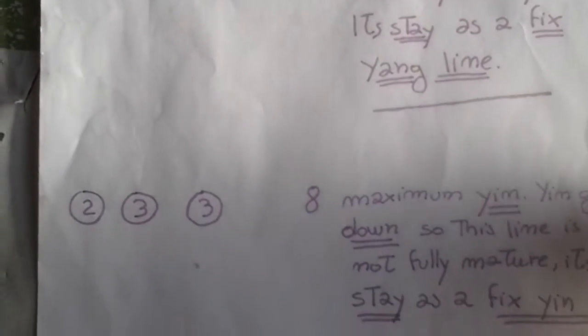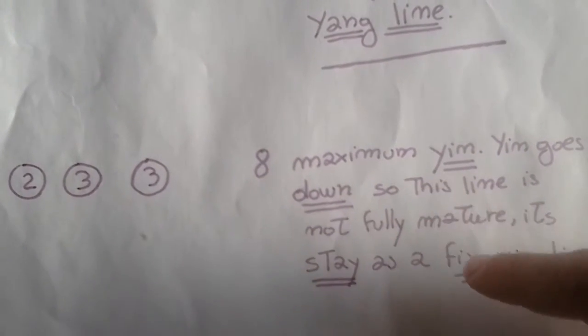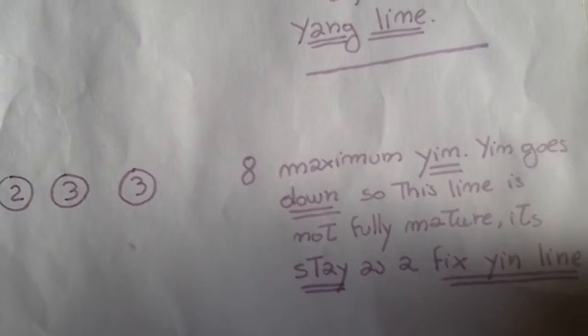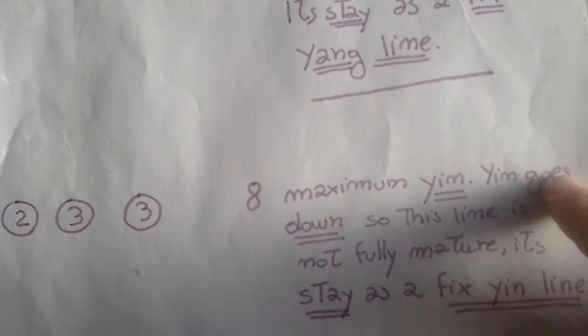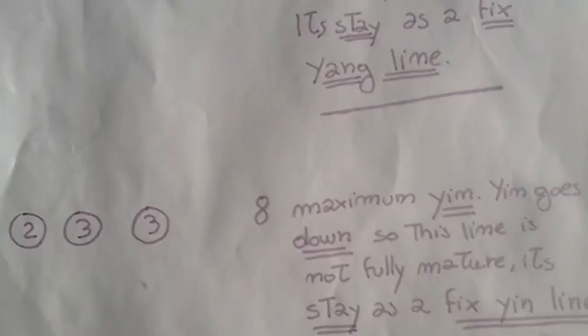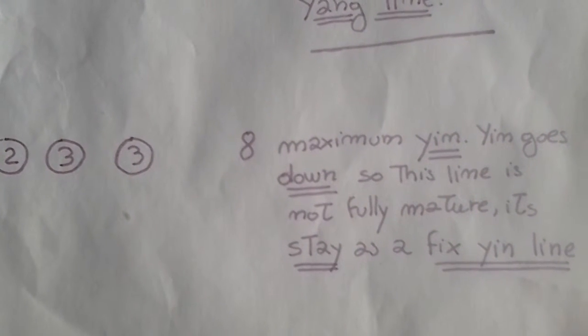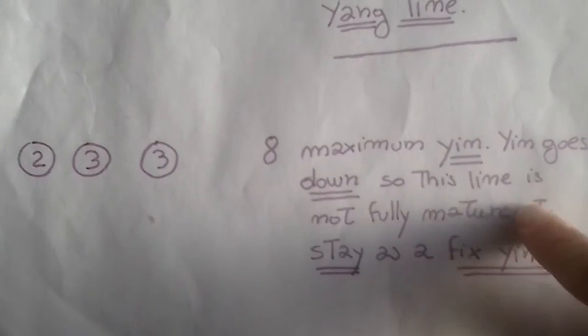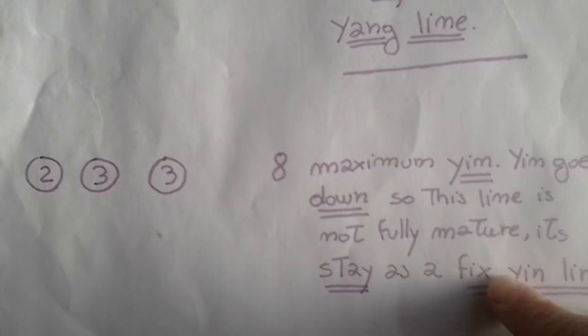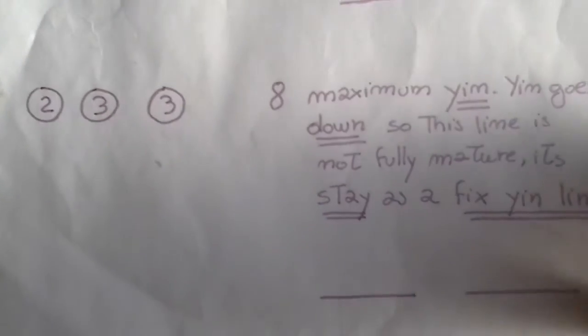Another possibility you can get is that you have two, three, and three, which gives eight. Eight is a pair number, and it's the maximum pair number that you can have. But yin goes down, so this is the upper number you can have. So this line is not fully a yin line, it didn't reach its maturity. So it stays as a fixed yin line, and you will draw it this way, a broken line.